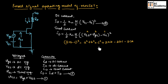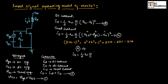Since A and B are positive, we get a positive sign for 2AB. Since C is negative, multiplying C with B gives a negative sign for 2BC, and similarly for 2CA. Since we are taking the square of C, we get a positive sign for C². Expanding equation 4, iD = (1/2) · KN · (W/L) · [VGS² + vgs² + VT² + 2·VGS·vgs − 2·vgs·VT − 2·VGS·VT]. In this, we need to consider only the AC components.